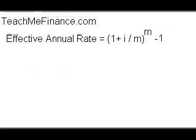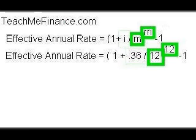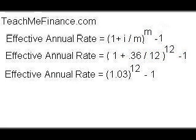Here is the formula for the effective annual rate. M is the number of compounding periods and I is the nominal interest rate. In this example, I is 36% or 0.36, and M is 12 compounding periods per year — one per month.